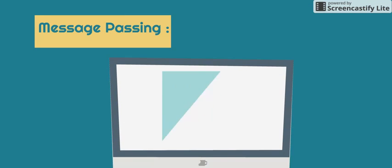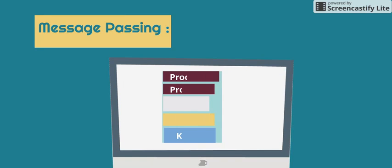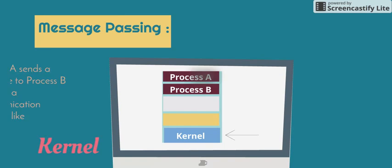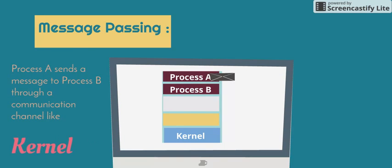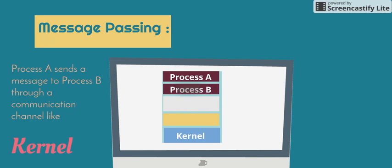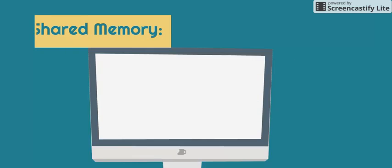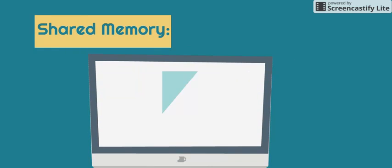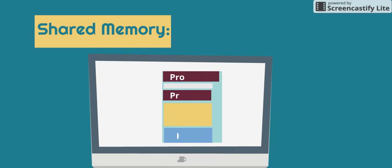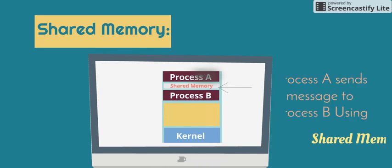Process A sends a message to process B through a communication channel like a kernel. Process A also sends a message to process B using shared memory.